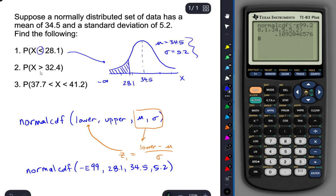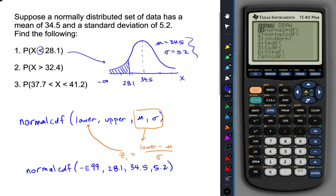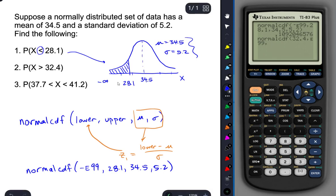Part B is similar. The only difference is since the greater than symbol, we're going to be doing an area to the right instead of area to the left. Which means 32.4 would be the lower bound of our shaded region. And you can draw it out if you like. But the lower bound would be 32.4. The upper bound is positive infinity, which we would use E99 for. And then the mean is 34.5. And the standard deviation is 5.2. So there's the area of that shaded region.